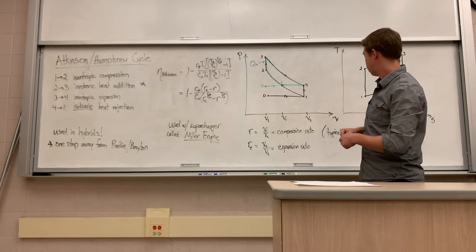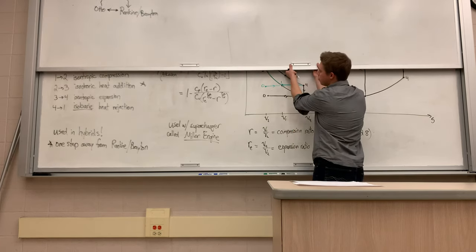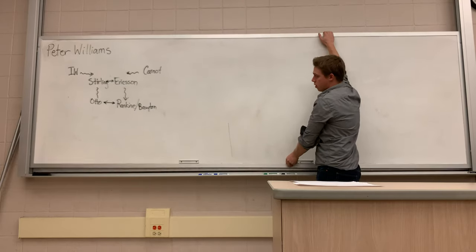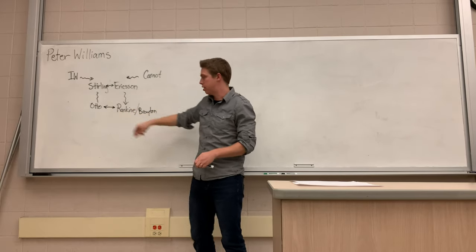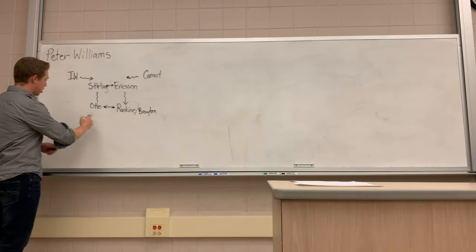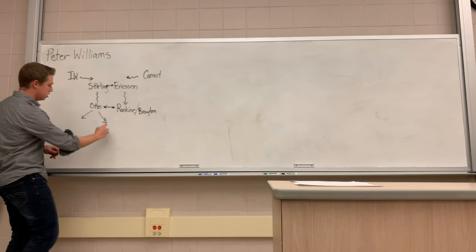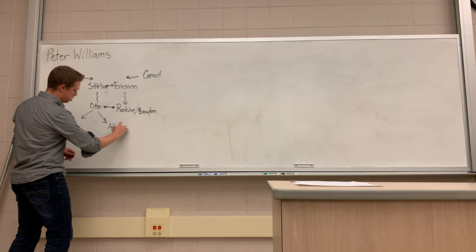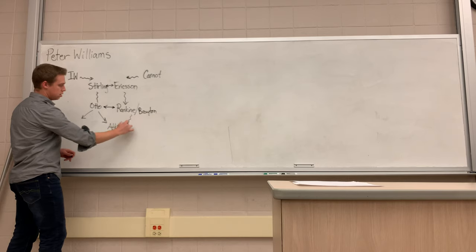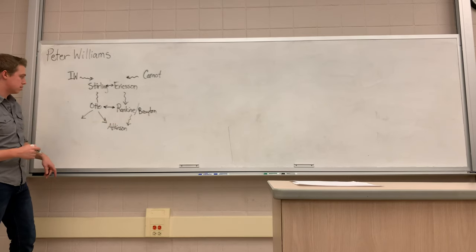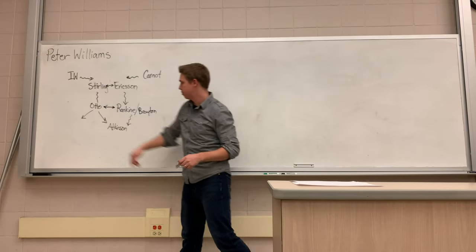Looking at the diagram from last time: we have the Otto cycle here, and there are two main cycles that are deviations of it. This is one of them — the Atkinson cycle — and notice also the connection to the Rankine or Brayton cycle. The other deviation is the subject of the next video.